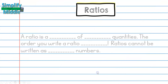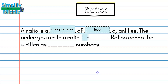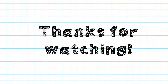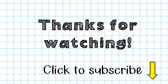Let's recap. A ratio is a comparison of two quantities. The order you write a ratio matters. Ratios cannot be written as mixed numbers. That wraps up our lesson. Thanks so much for watching. Feel free to click the red subscribe button so you always have access to this and other lessons. Thanks again for tuning in. Until next time.